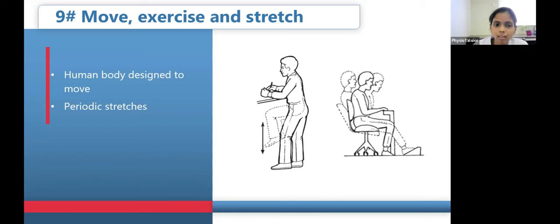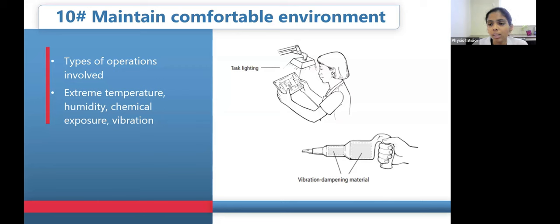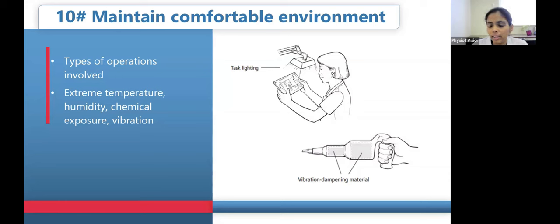The tenth principle is maintaining a comfortable environment. The ideal environment depends on the type of work. There should be no extreme temperatures — if too cold, a ventilator or cold air deflector may help; if too hot, heat shields can be used. There should be no excessive humidity, nor exposure to toxic or chemical substances. To dampen noise, mufflers can be used. Lighting should be adequate with no glare or shadow — for example, adequate lighting is essential when giving motor point stimulation to see the contraction. Vibration-dampening materials can reduce exposure when working with vibrating tools.